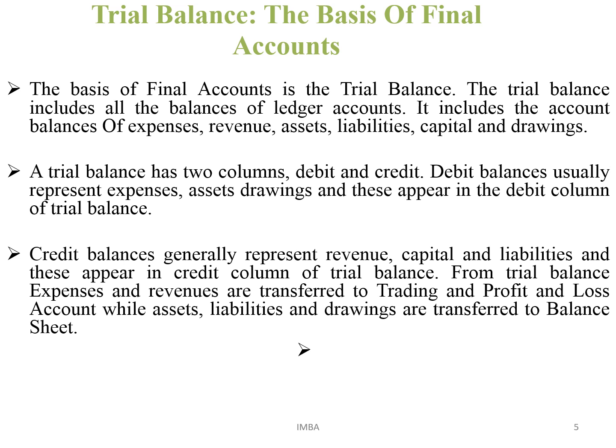A trial balance has two columns: debit and credit. Debit balances usually represent expenses, assets, and drawings, and these appear in the debit column of the trial balance. Credit balances generally represent revenue, capital, and liabilities, and these appear in the credit column of the trial balance. From the trial balance, expenses and revenues are transferred to trading and P&L accounts, while assets, liabilities, and drawings are transferred to the balance sheet.